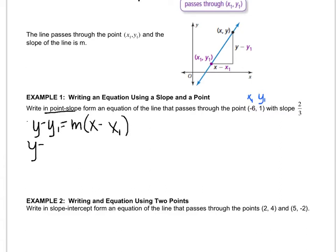y minus 1 equals, they tell me the slope is two-thirds, x minus, and they tell me that x1 is negative 6. So I can write it as x minus negative 6, but that just looks weird, so I'm going to rewrite this. So although it doesn't look like any of the forms that we've ever done, this is the equation of that line written in point-slope form.